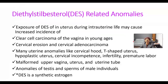Diethylstilbestrol (DES) is a teratogenic drug that was used to manage abortion, prevent preterm delivery, and treat diabetes and preeclampsia during the 1970s. However, it was found that mothers who took DES had daughters who suffered significantly, and even the male children of those mothers may have problems with the testes.